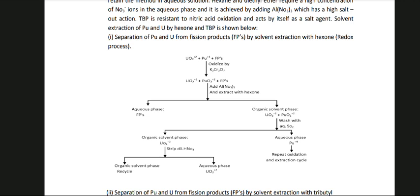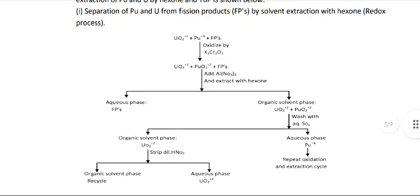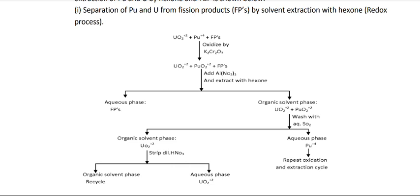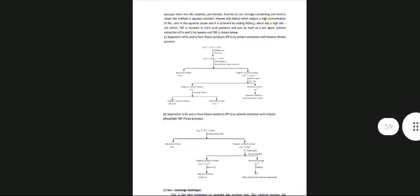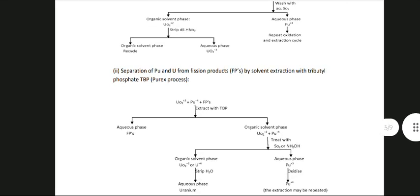Separation of Pu and U from fission products by solvent extraction with hexone and redox process: Oxidized by K2Cr2O7 to form UO22+ and PuO22+ with fission products. Add Al(NO3)3 and extract with hexone — aqueous phase and organic solvent phase. Wash out with aqueous SO2; aqueous phase contains Pu+4, organic solvent phase contains UO2+ with fission products. Strip with dilute HNO3 to recover UO2+ with fission products; organic solvent phase is recycled. Repeat oxidation and extraction cycle. Separation is also done by solvent extraction with tributyl phosphate — the PUREX process.